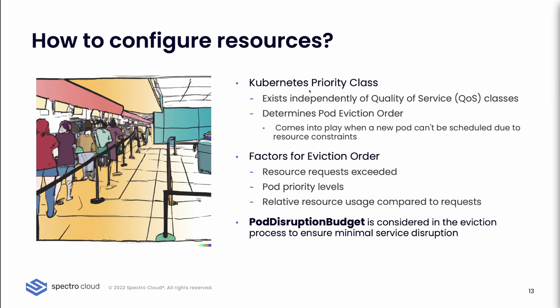There are different factors for the eviction order: first, whether resource requests are exceeded; then pod priority levels calculated by the system; and relative resource usage compared to requests. These classes are set manually and declaratively by the user within the pod configuration. Another component taken into account is the Pod Disruption Budget, which defines the minimum number of pods that must be running for a particular deployment or higher-level controller.